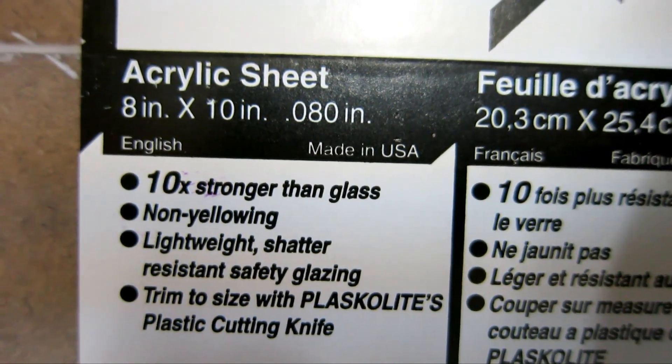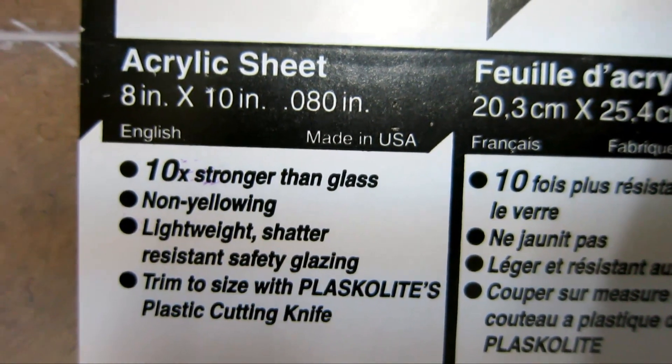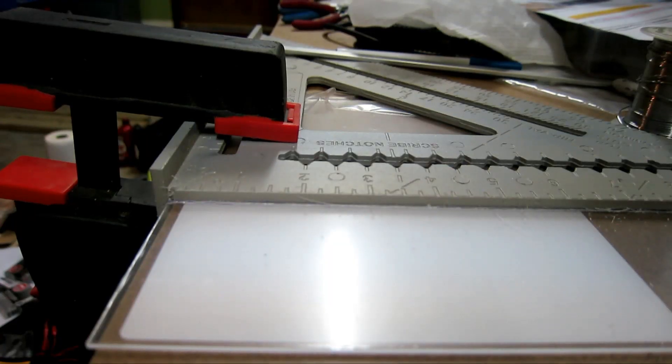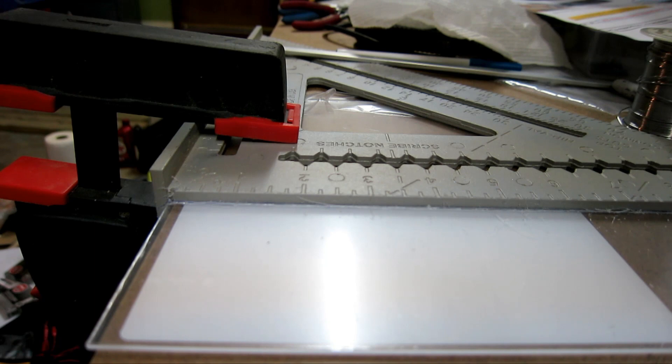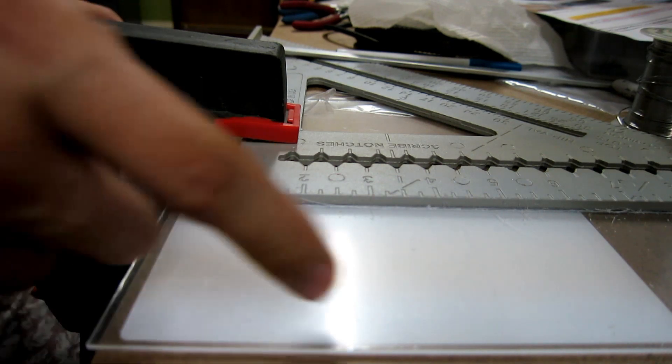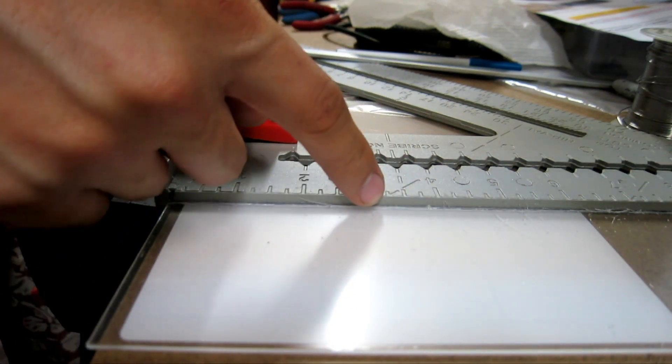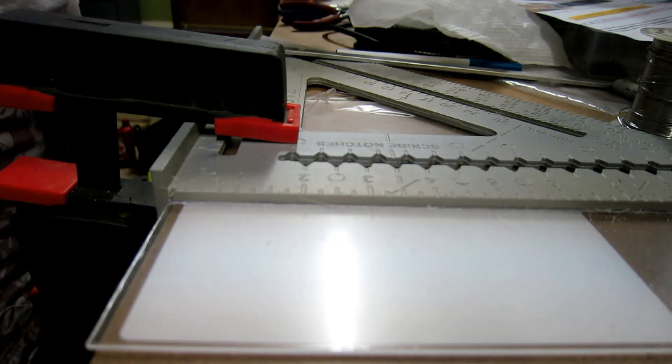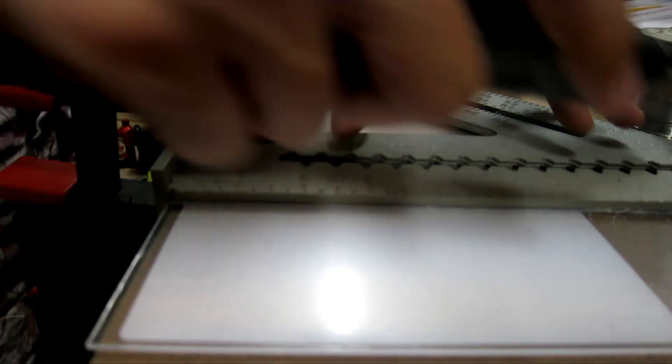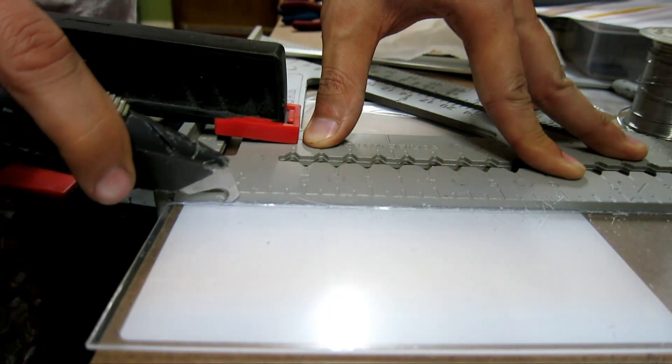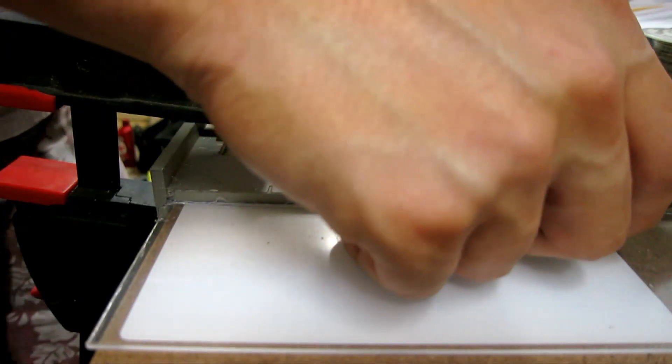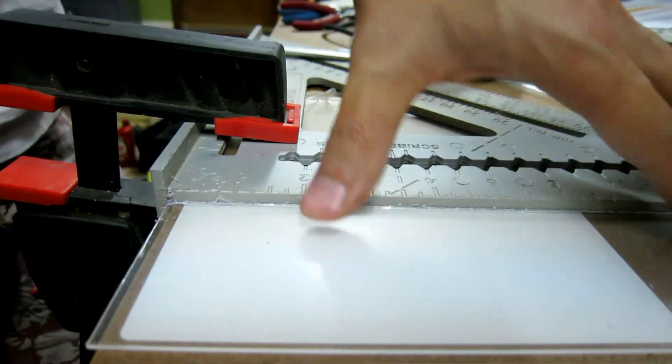So here's the acrylic sheet that's 8 by 10.08 inches thick. As you can see right here, this is my plexiglass. I measured 72 millimeters across this diameter. I bought this plexiglass at a local hardware store for four dollars for a whole sheet. And I'm just going to score it and break off this piece.